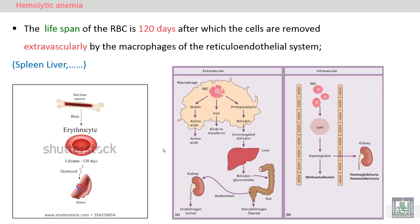Before we discuss hemolytic anemia, we need to know that the lifespan of red blood cells is 120 days. After 120 days, the red blood cell will be aged and destroyed extravascularly in the liver and spleen, due to the presence of macrophages.